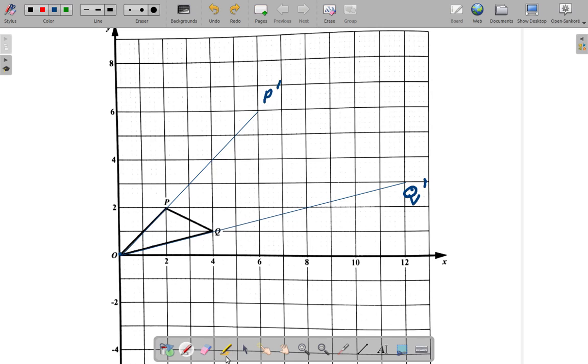So, the line P prime Q prime would be this line then. That's the line P prime Q prime. Center is O. So, everything, all the lines to get it radiate from O. And the scale factor is 3.